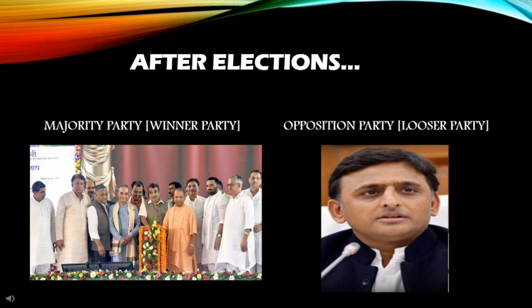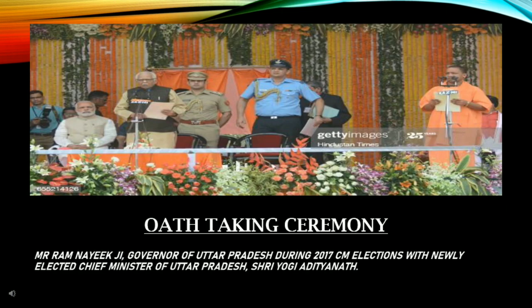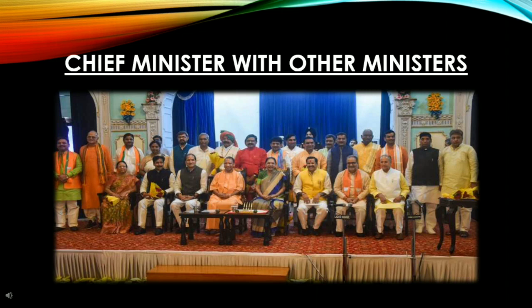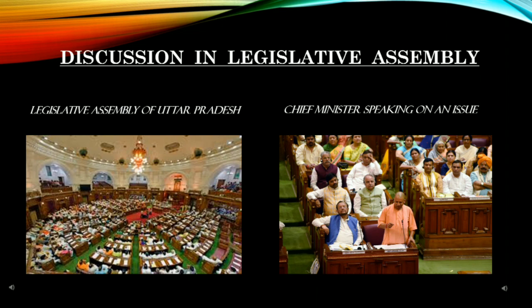The party that wins is called the majority party, and the party with fewer votes is called the opposition. After the election, the state's governor appoints the Chief Minister and other ministers and administers their oath. The governor is the head of the state and is appointed by the central government so that they can make the state government work according to the constitution. The Chief Minister and other ministers are then responsible for running the various departments and ministries of the government. Each has their own separate office. The Legislative Assembly is the place where all MLAs — whether from the ruling party or opposition — meet and discuss different issues. Some MLAs carry a dual responsibility: they are both the MLA of their area and have also become ministers.